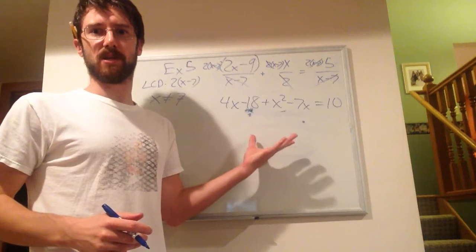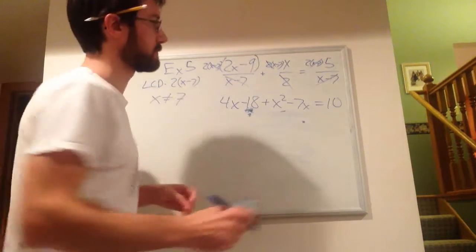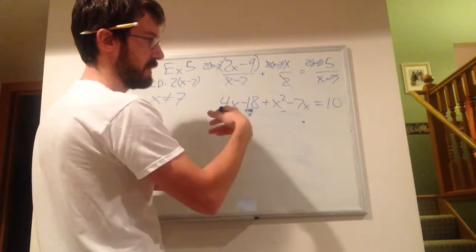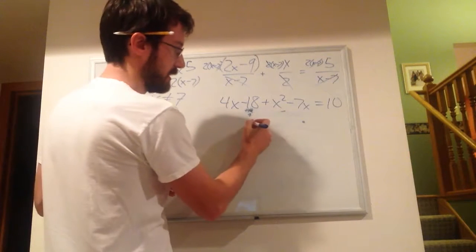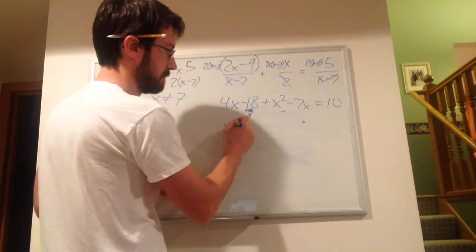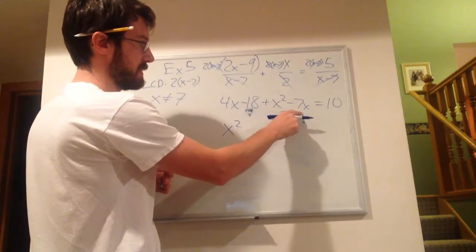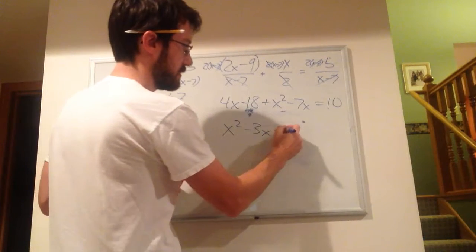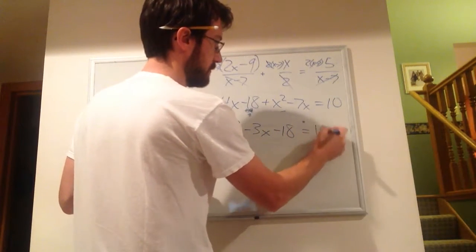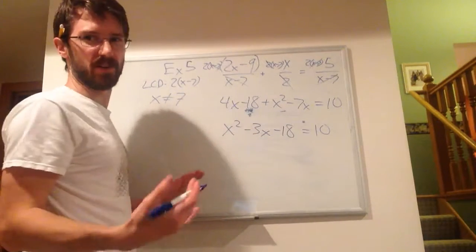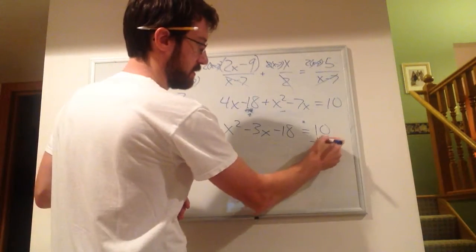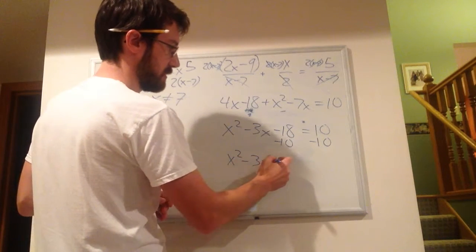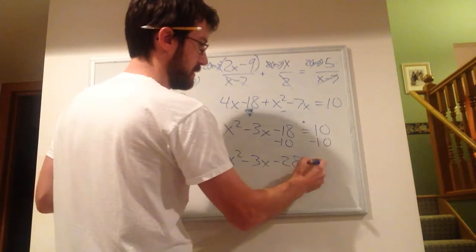Now, I want to combine like terms and solve this quadratic. Let's see. I'm going to combine the like terms on this side before I move the 10 over here. My leading term should be the x squared. Then, I've got a 4x and a minus 7x, so that's minus 3x, and a negative 18x, or a negative 18, excuse me, equals 10. Now I can move that 10 over there. It looks a little bit nicer. Minus 10 on both sides, and we get x squared minus 3x minus 28 equals 0.